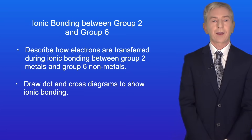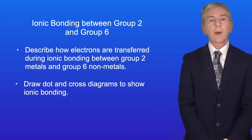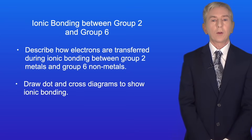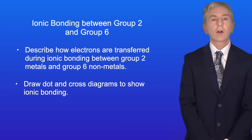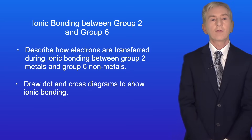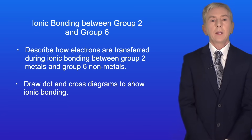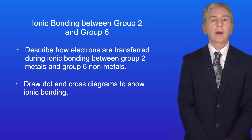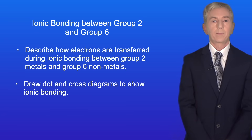Hi and welcome back to Free Science Lessons. By the end of this video you should be able to describe how electrons are transferred during ionic bonding between group 2 metals and group 6 non-metals. You should then be able to draw dot and cross diagrams to show ionic bonding.